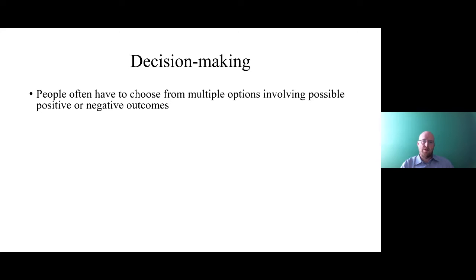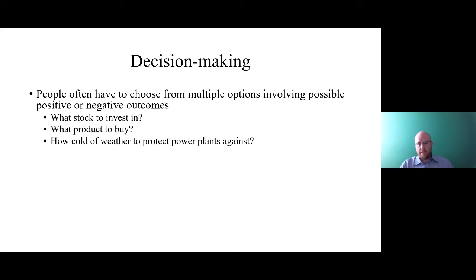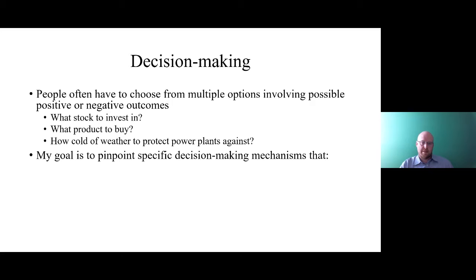People often have to choose from multiple options involving positive or negative outcomes — we do this multiple times per day, and a lot of times these decisions are very important. Examples include what stock to invest in, whether to sell when it's high or buy when it's low, what product to buy, what restaurant to go to — and then of course a decision like how cold of weather to protect power plants against. My goal is to examine specific decision making mechanisms.